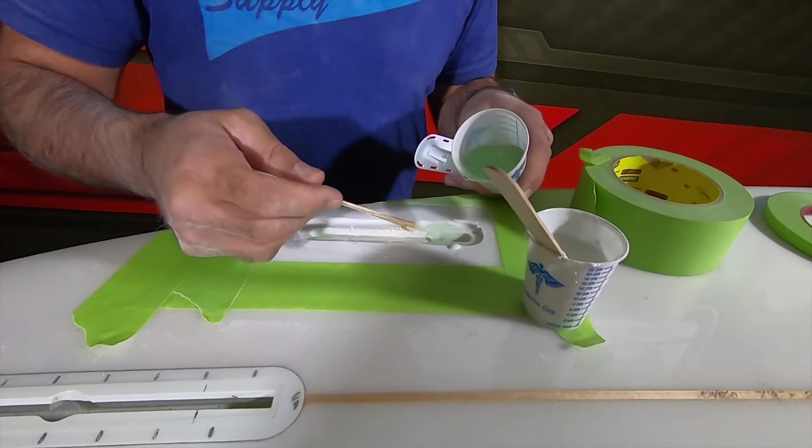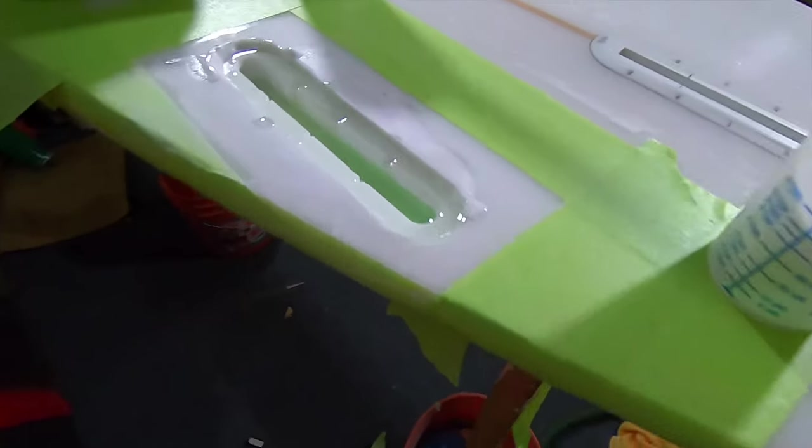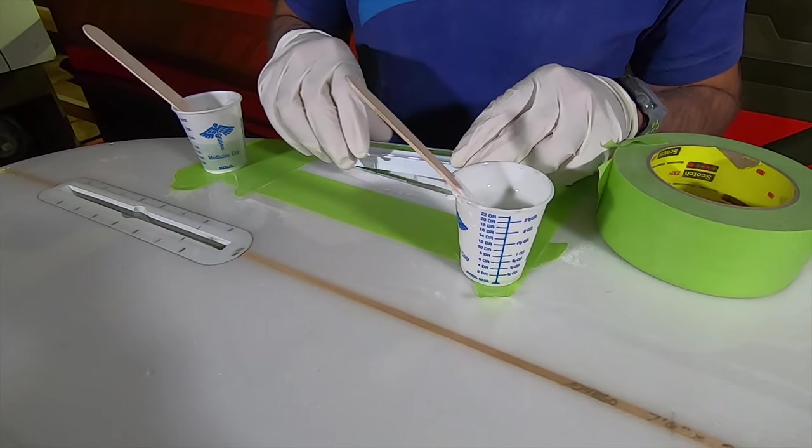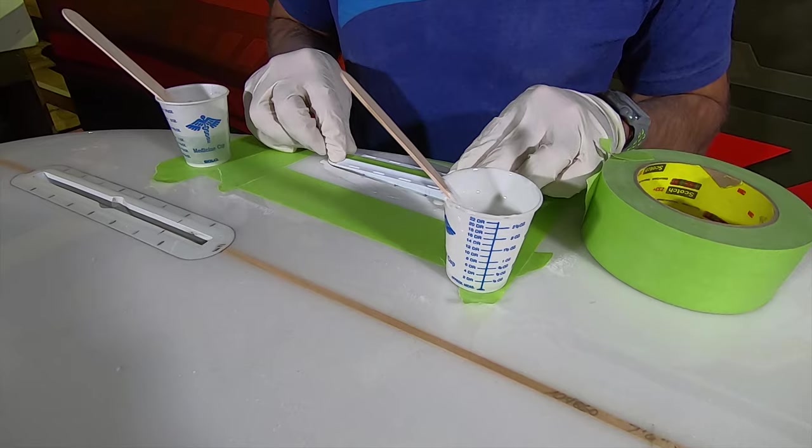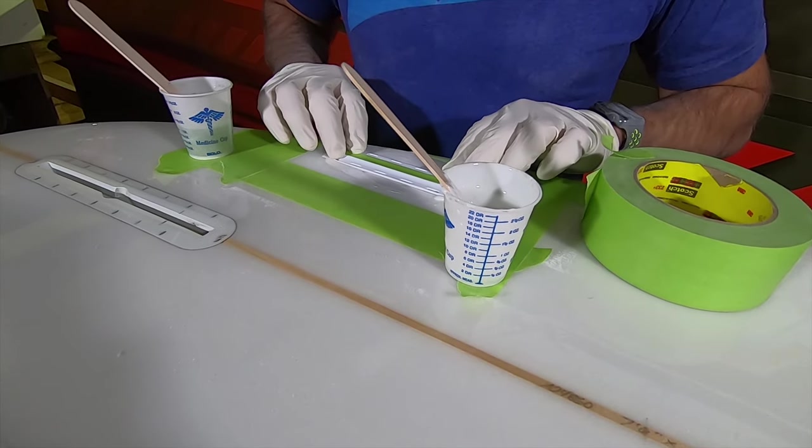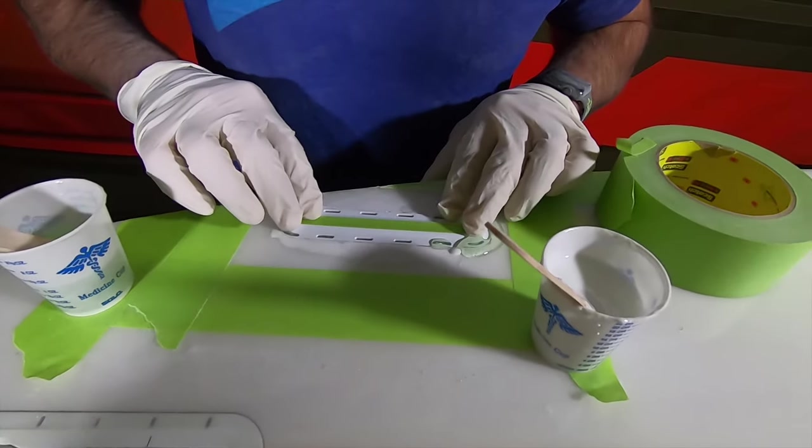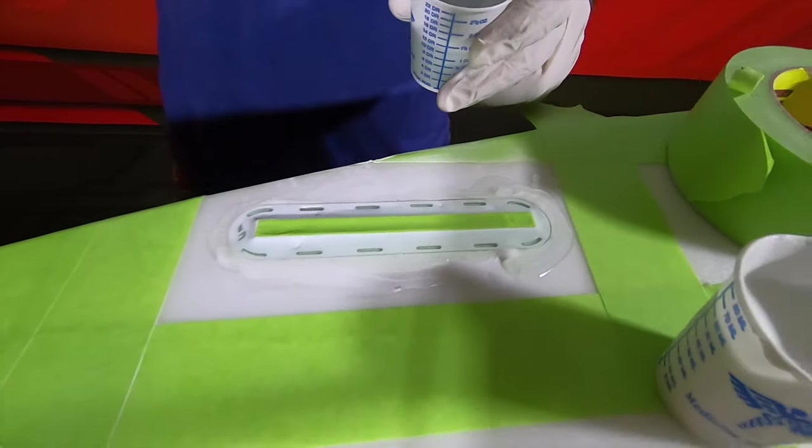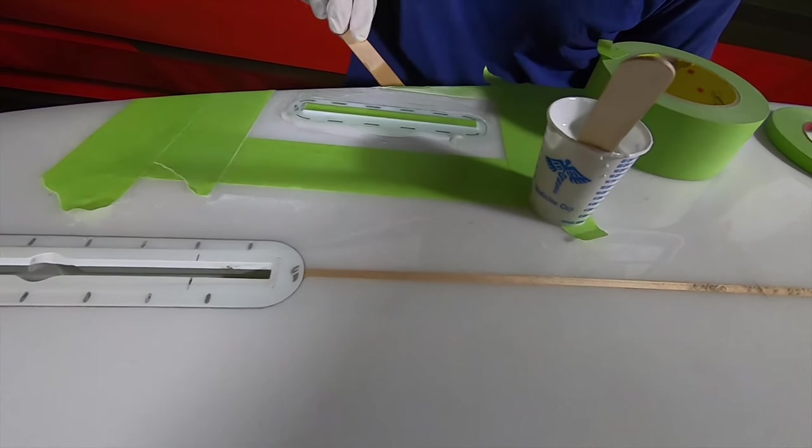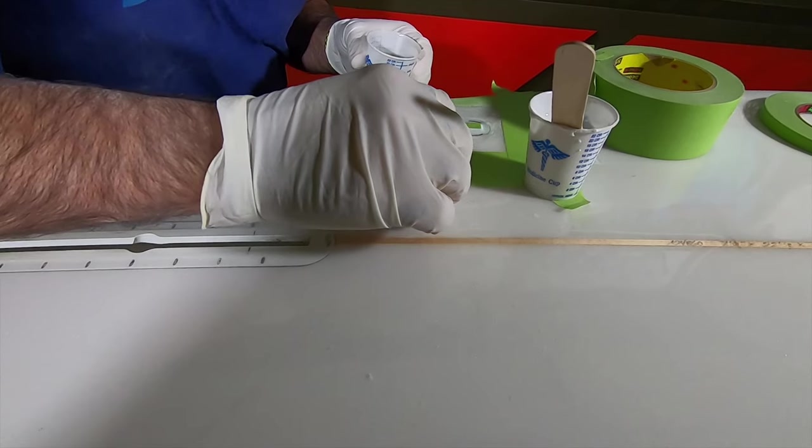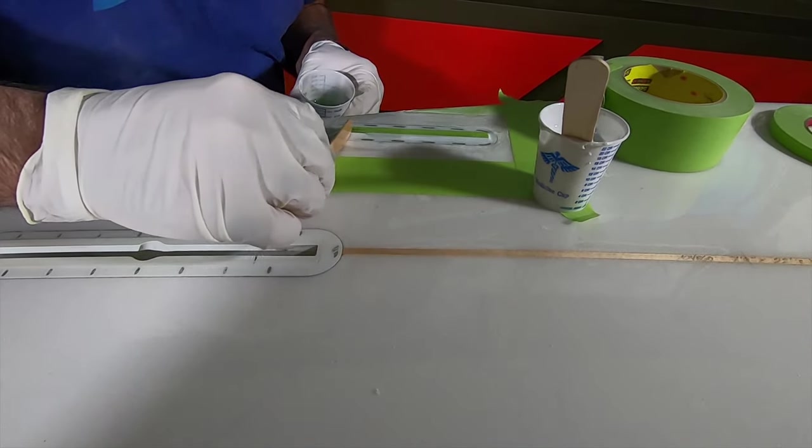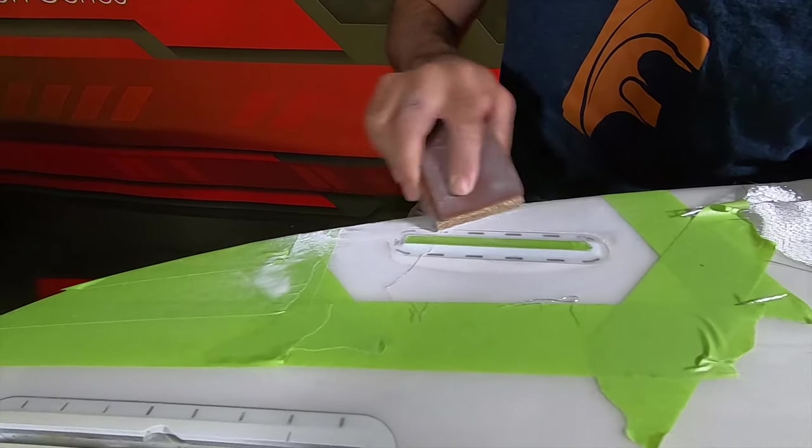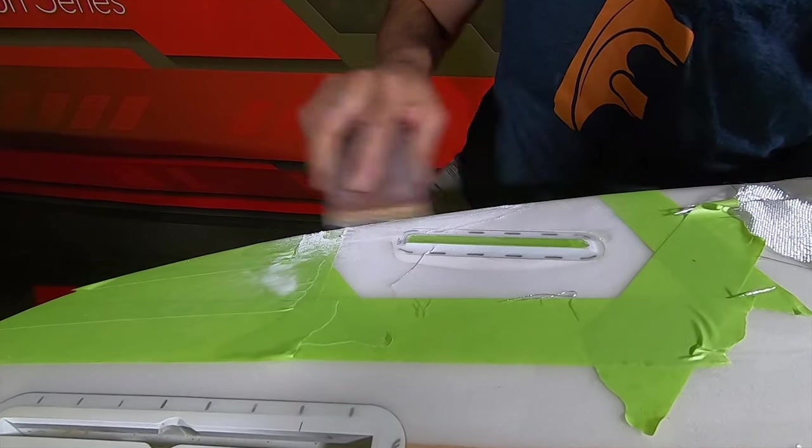Next we're going to apply some clear resin to the fin box cavity and press the fin box in place. The fin box has been masked off so no resin will get into it. We want to press that down and make sure the little holes around the fin box are filled with resin and get that all leveled off. We don't want any excess resin on the surface there. We want a nice smooth surface.